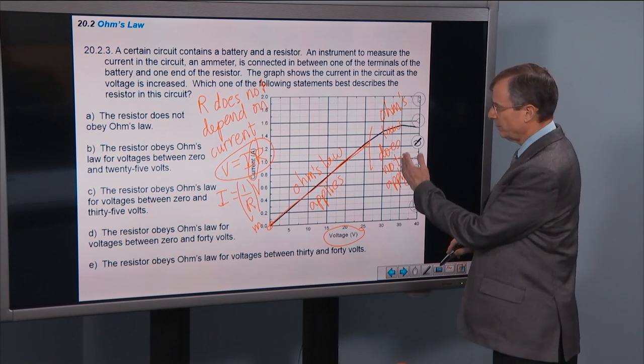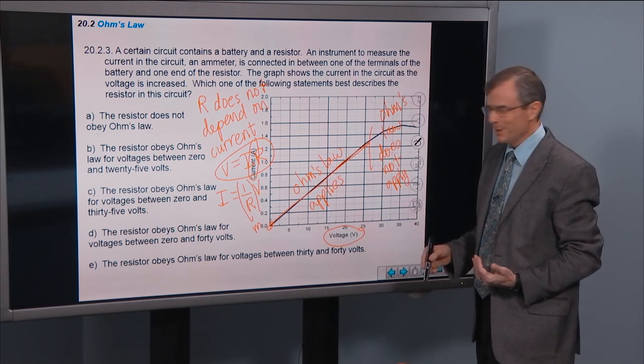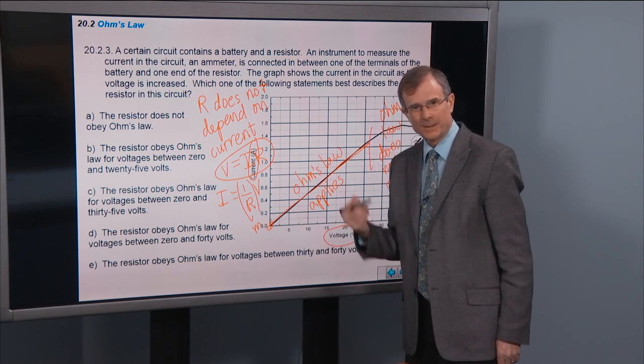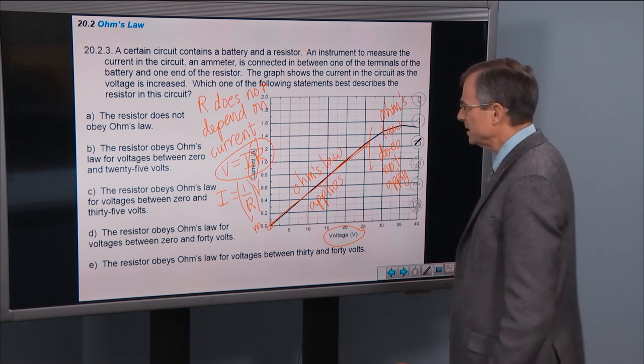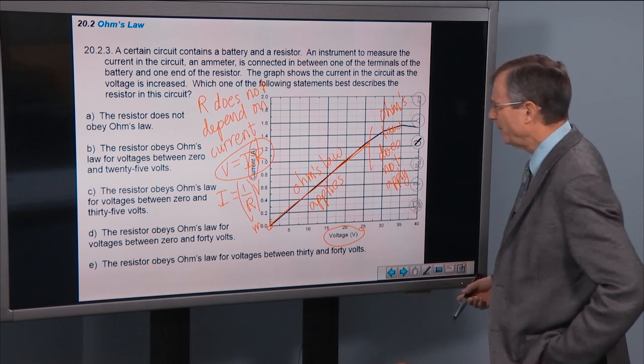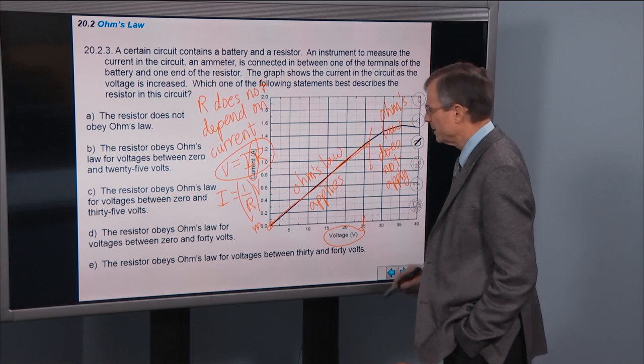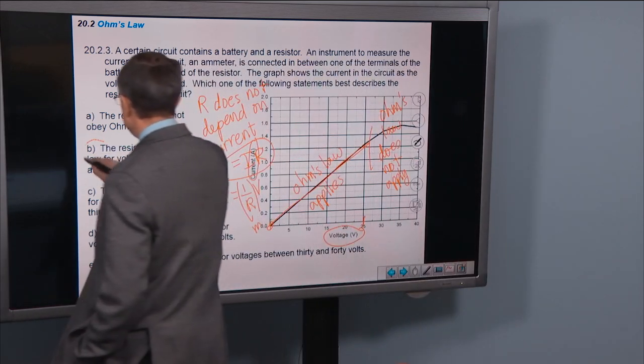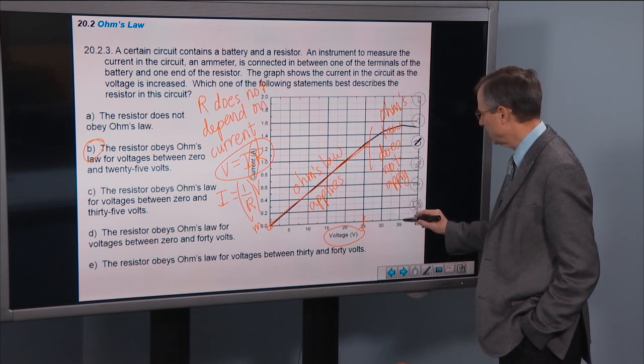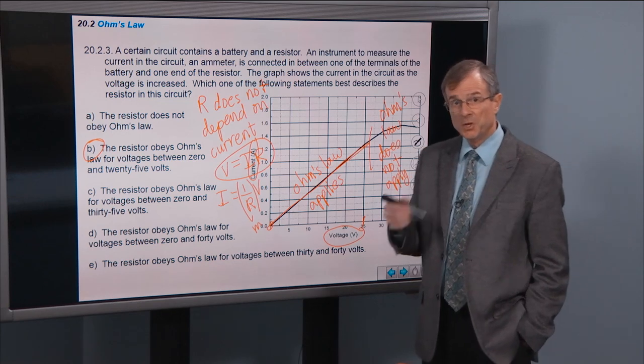Well, here it does not apply. Why? Well, because I and V are no longer proportional to each other. There's some other dependence and that means that the resistance here depends on the current. So let's see which of these answers. The resistor obeys Ohm's law for voltages between 0 and 25 volts. Looks like that's about where we thought it was. This one says 0 and 35, well I don't think so. Up here we're starting to see some non-linearity, so that doesn't work.